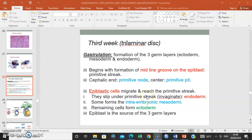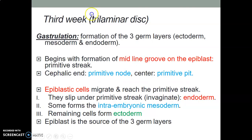Hello everyone, it's Dr. Amida again. We continue with our embryology series. This is about the third week after fertilization. So in the third week, that is when you form the trilaminar disc. The process of gastrulation occurs, and you're going to form three germ layers: the ectoderm, mesoderm, and endoderm.